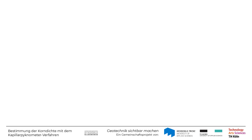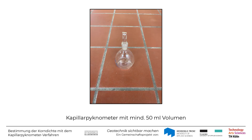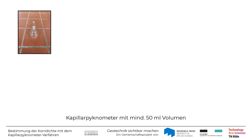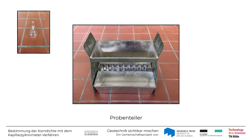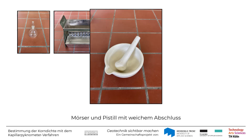Um die Korndichte Rho-S mittels Kapillarphygnometer zu bestimmen, braucht man ein Kapillarphygnometer mit mindestens 50 ml Volumen, einen Probenteiler, sofern die Probenteilung nicht per Hand erfolgt, sowie Geräte zum Zerkleinern von Proben wie Mörser und Pistil mit weichem Abschluss.